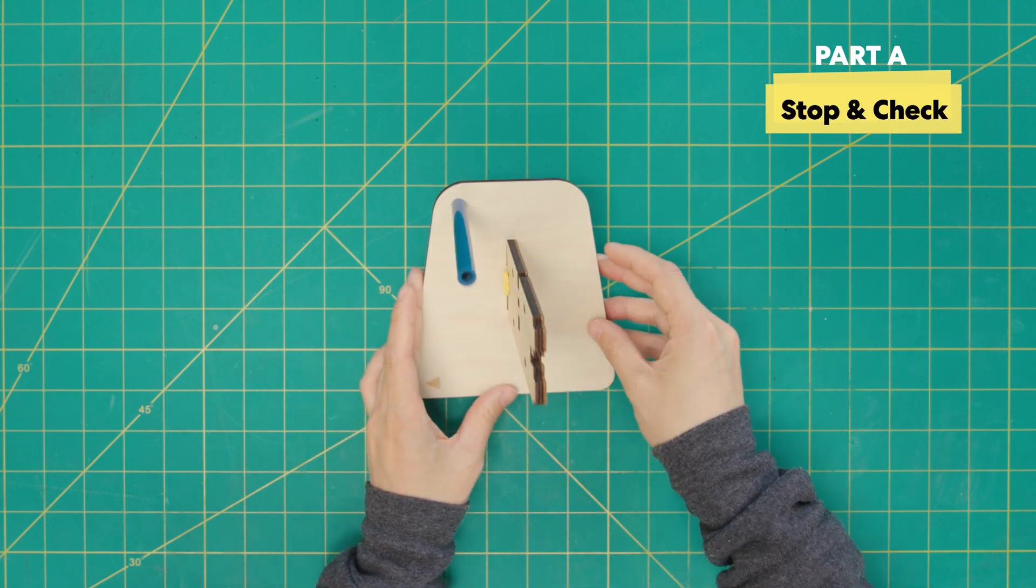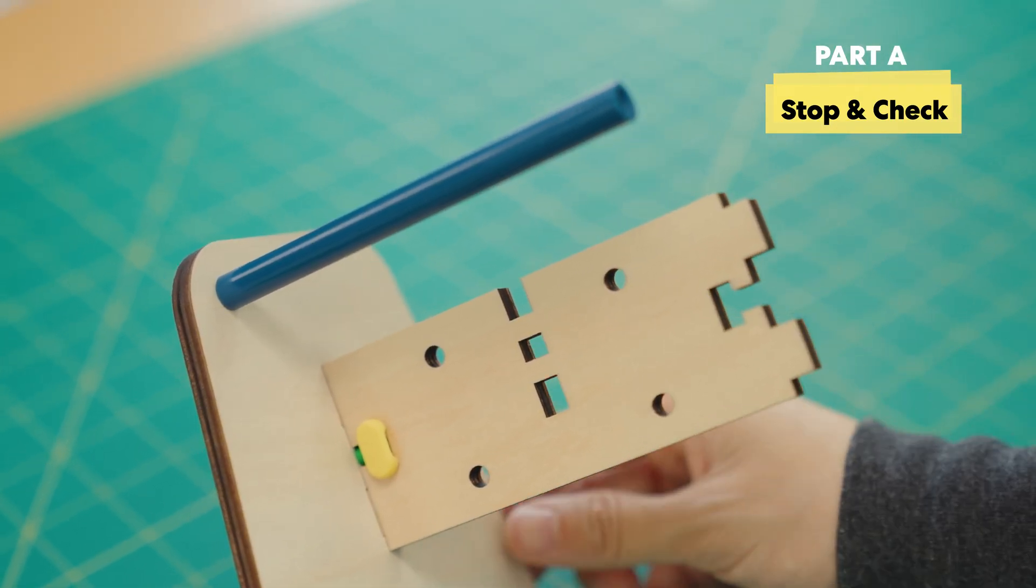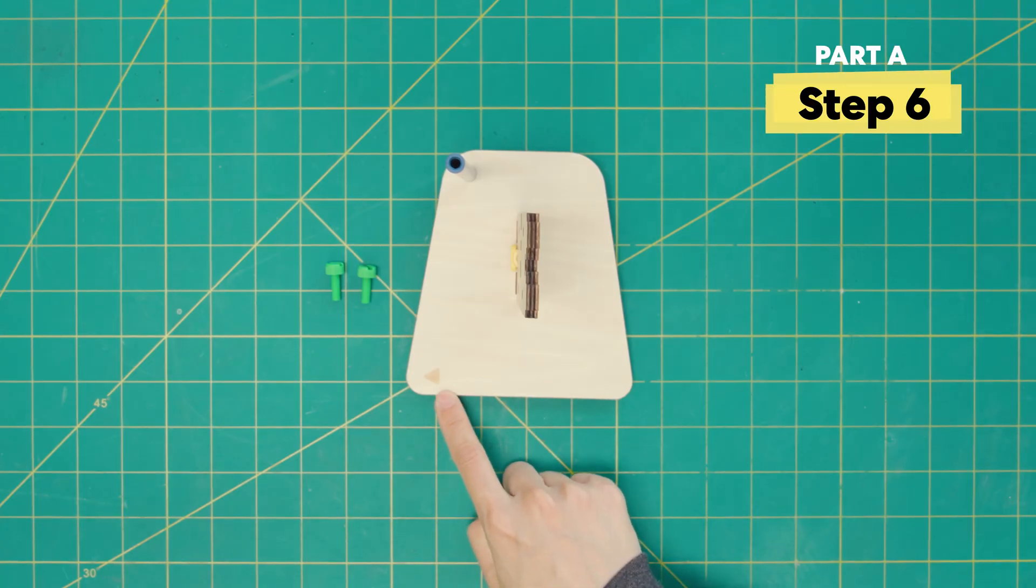Now it's time for our first stop and check. Make sure the notch is facing up and towards the blue rod. Make sure the arrow is still facing this way.